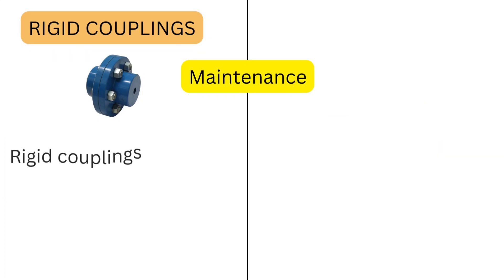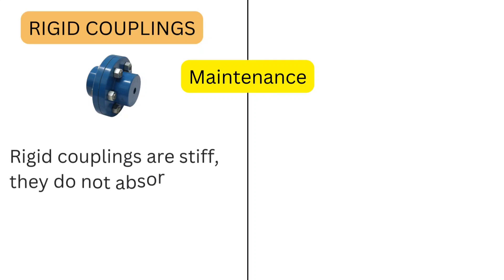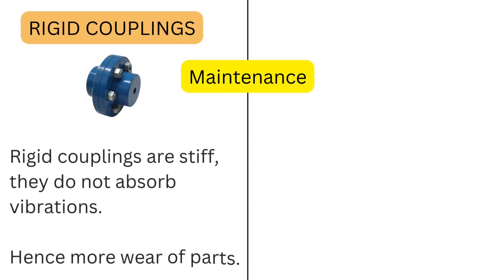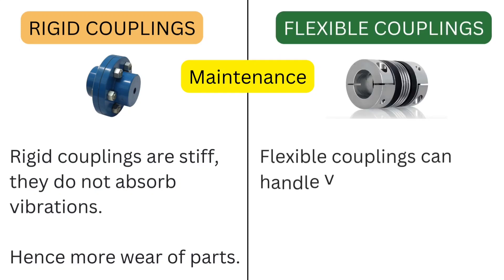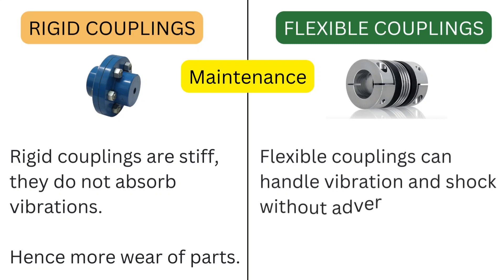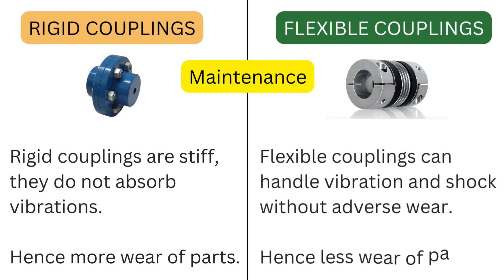Comparing vibration and wear: Rigid couplings are stiff — they do not absorb vibrations, hence causing more wear of parts. Flexible couplings can handle vibration and shock without adverse wear, resulting in less wear of parts.